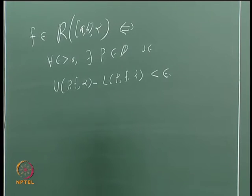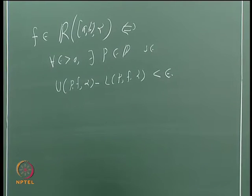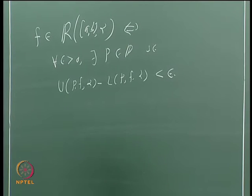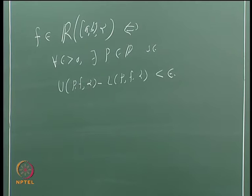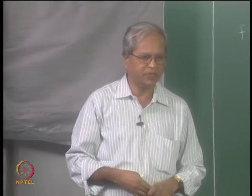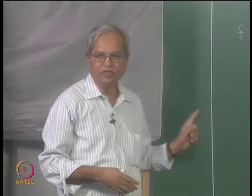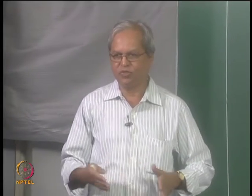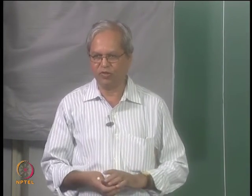Using this criterion we showed that every continuous function is Riemann integrable, and with a slight modification of the same proof we observed that whenever α is any monotonically increasing function, every continuous function is also Riemann-Stieltjes integrable. The main tool used there was that every continuous function defined on a closed bounded interval is uniformly continuous, and using that we subdivided the partition in a particular way.